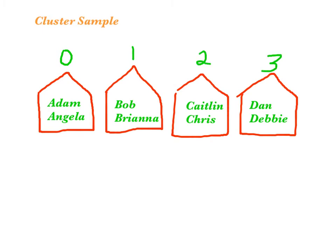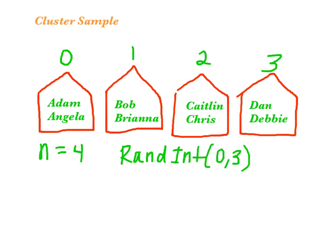We still need to use the table of random digits or the calculator. We want to select a sample again of size 4. So I'll use the calculator command randint(0, 3). This time I'm only going to need to get 2 random numbers because we have 2 people in each of our clusters. When I do that I get 1, 2. So our sample will be house 1, which is Bob and Brianna, and house 2, which is Caitlin and Chris. That's a cluster sample.